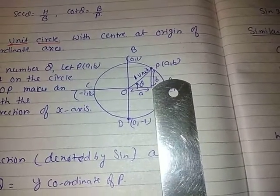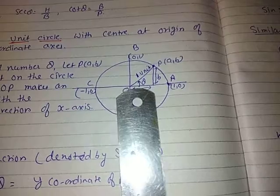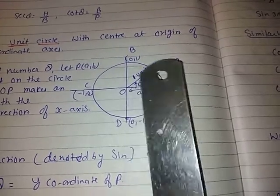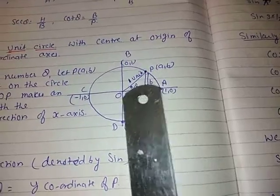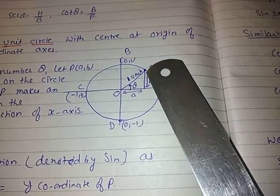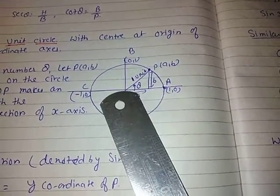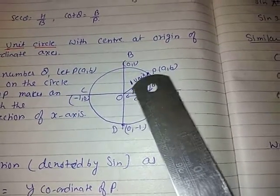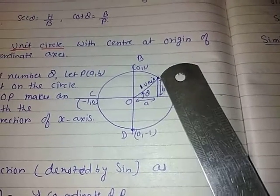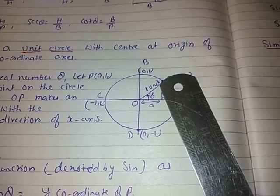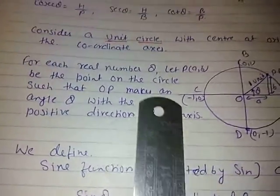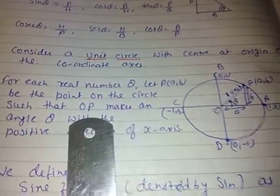Since the point is (a, b), the perpendicular distance is b and the horizontal distance is a. The line OP passes through the origin and joins P — it is the hypotenuse of the triangle, with length √(a² + b²). But since OP is also a radius, its length is 1. So for each real number theta, let P(a, b) be the point on the circle such that OP makes an angle theta with the positive x-axis.